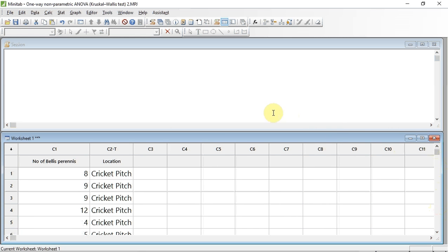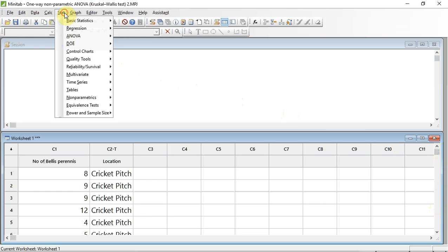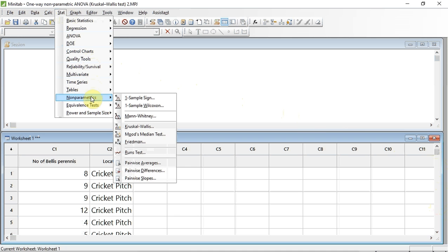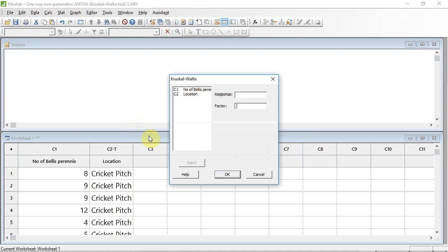To perform the test, go up to stat and click, go down to non-parametric, a sub-menu opens and go down to Kruskal-Wallis and click. Now to tell Minitab the variables we're going to use. I'm going to click in the response variable window. It gives me my options, in this case column 1, the number of Bellis perennis plants. I'm going to select that and then press the select button.